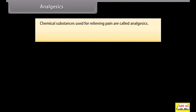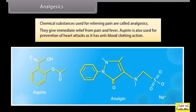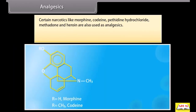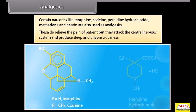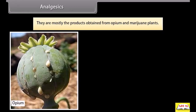Analgesics: chemical substances used for relieving pain are called analgesics. For example, aspirin and analgen — they give immediate relief from pain and fever. Aspirin is also used for prevention of heart attacks as it has anti-blood-clotting action. Certain narcotics like morphine, codeine, pithidine hydrochloride, methadone and heroin are also used as analgesics. These do relieve the pain of the patient, but they attack the central nervous system and produce sleep and unconsciousness. They are mostly products obtained from opium and marijuana plants.